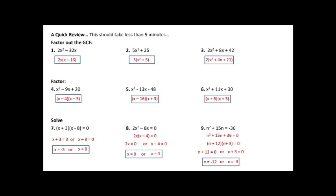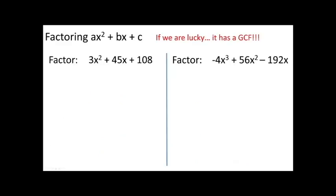Those were review items, so I went through them fairly quickly. If you had a lot of trouble with those, I recommend going back and reviewing the previous two videos before moving on, because if you can't do those without great difficulty, what we're about to do next is going to be very challenging. Today we're going to be factoring trinomials in the form ax squared plus bx plus c. Yesterday we did x squared plus bx plus c — so now we've added a leading coefficient that is not 1.